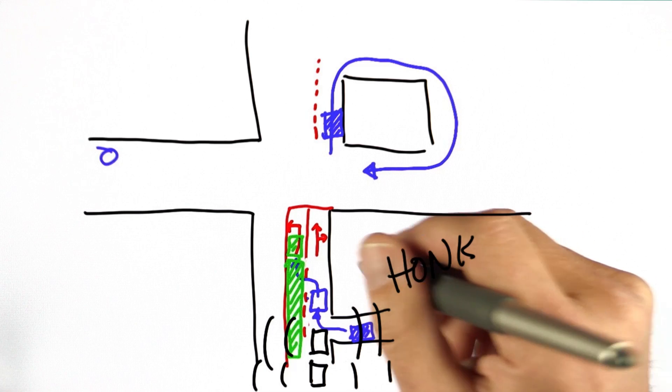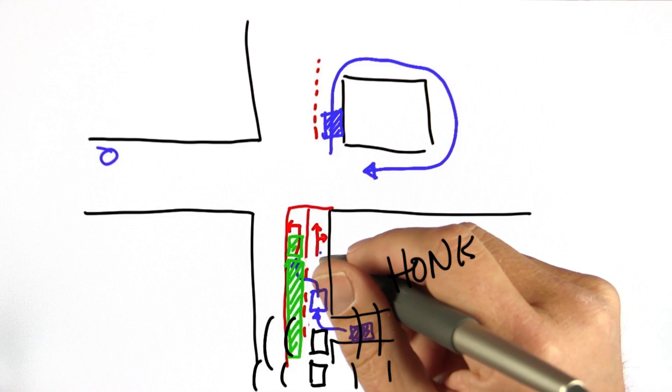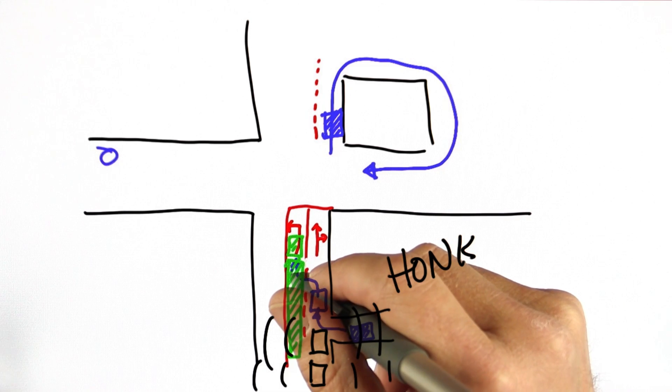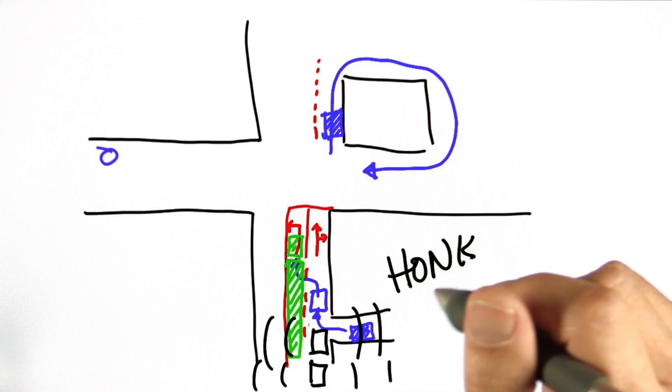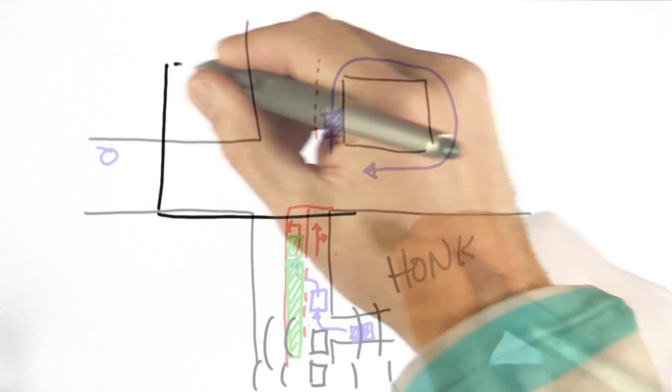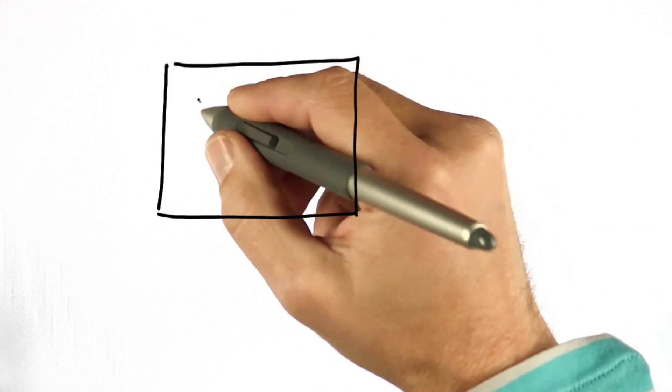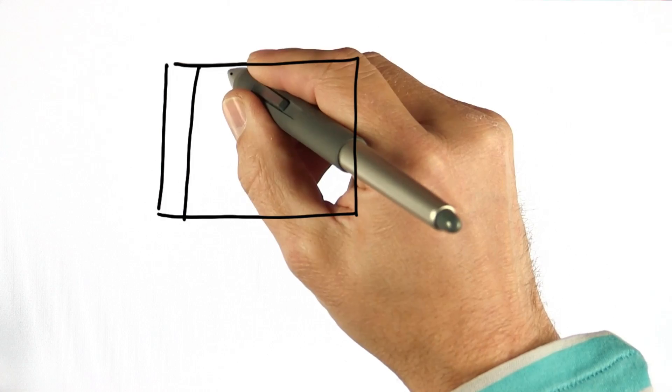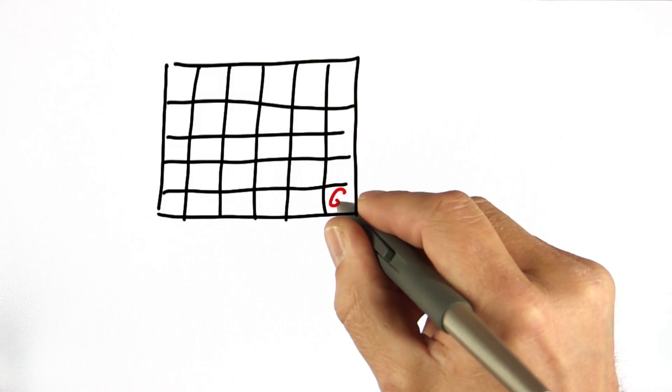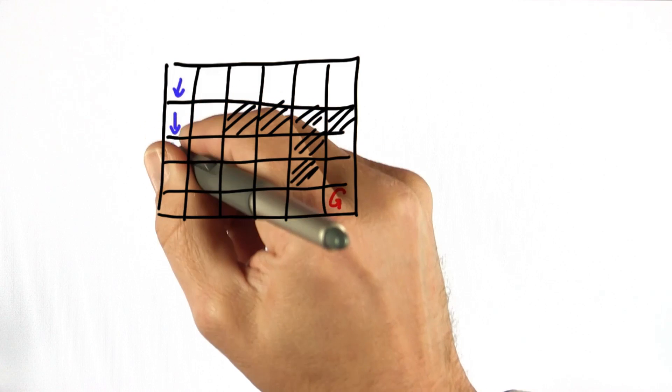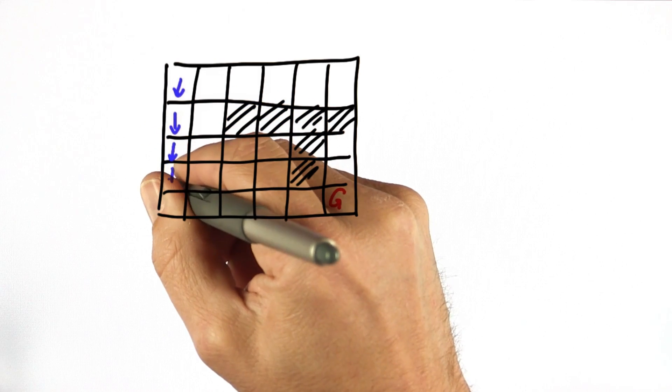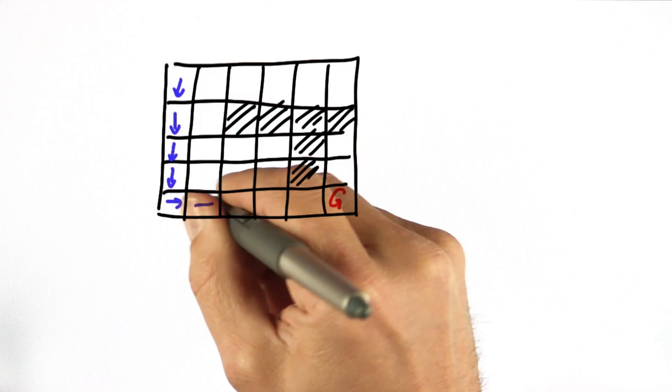What that means is you need a plan not just for the most likely position, but you might need a plan for other positions as well. So what dynamic programming gives you is a plan for every position. If we redraw this environment as a grid with a goal location and certain obstacles...